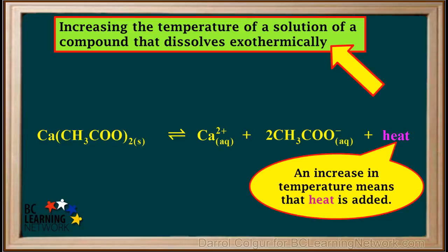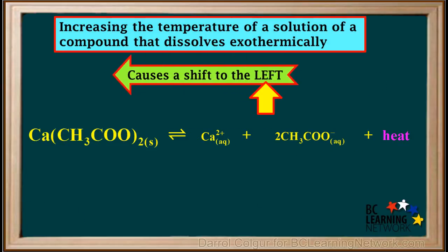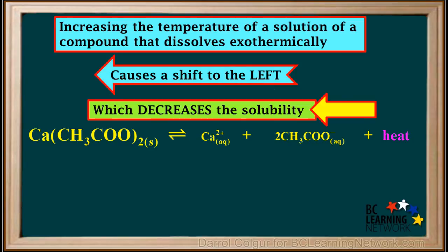So we can summarize by saying that increasing the temperature of a solution of a compound that dissolves exothermically — which means adding heat to it — causes the solubility equilibrium to shift to the left, which decreases the solubility.